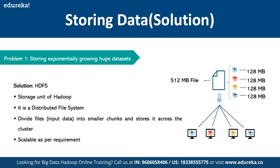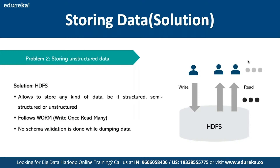The solution to storing exponentially growing data is HDFS, which is the storage unit of Hadoop — a distributed file system where we can divide files into multiple smaller chunks and store them across different clusters. For example, a large 500 MB file is divided into smaller packages stored on different nodes for quick processing. HDFS also solves the problem of storing unstructured data, as it can store any kind of data — structured, semi-structured, or unstructured — following the WORM theory: Write Once, Read Many, with no schema validation required when dumping the data.